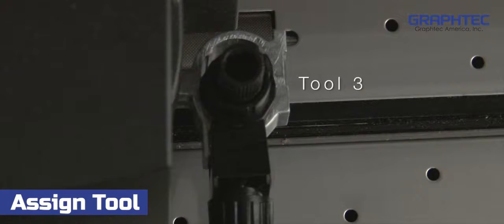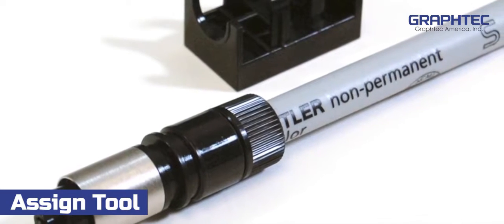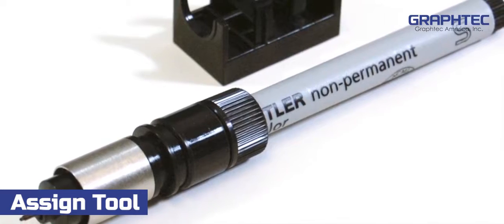The front position is considered tool 3, and the back position is considered tool 1. Tool 2 is assigned to an auxiliary pen holder option.